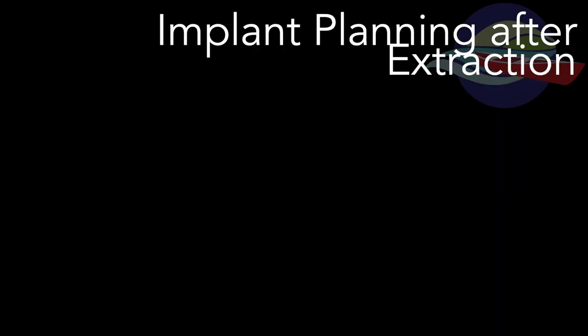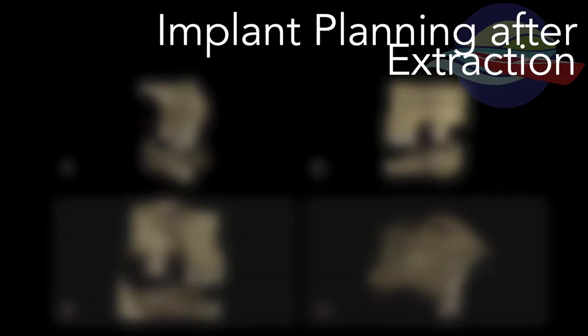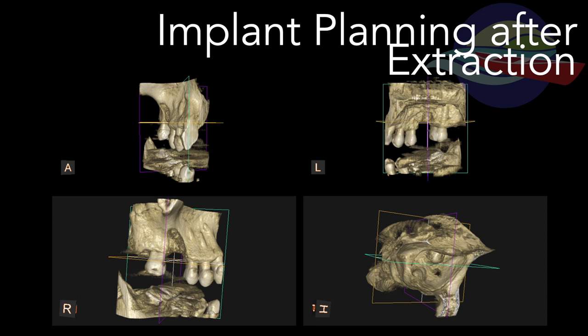In another example, the CBCT in our periodontal clinic is used most often for planning implant placement. Here we can see in multiple views exactly where an implant will be placed and the quality of the bone in which it will be placed. This view helps our clinicians to decide in advance if bone grafting is going to be necessary for our patients.